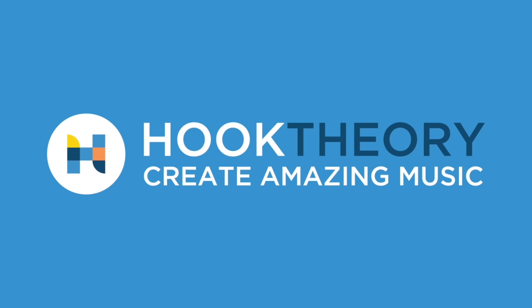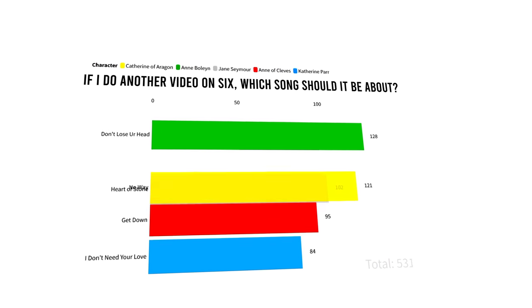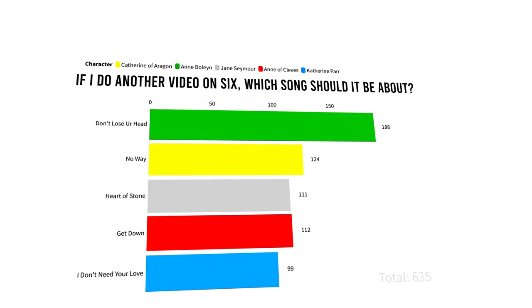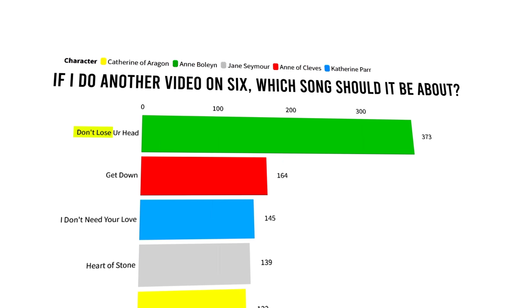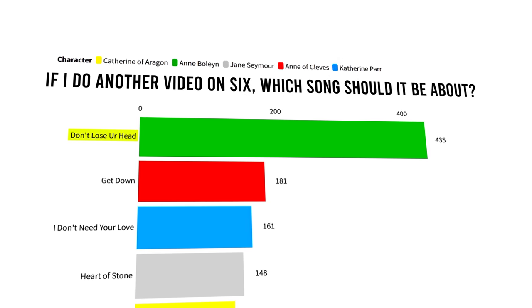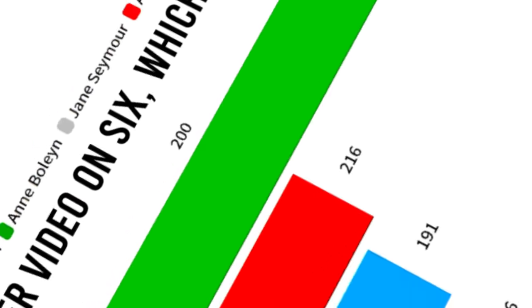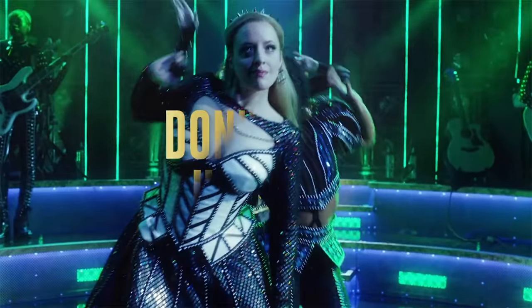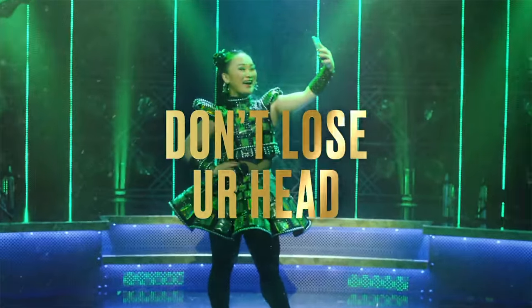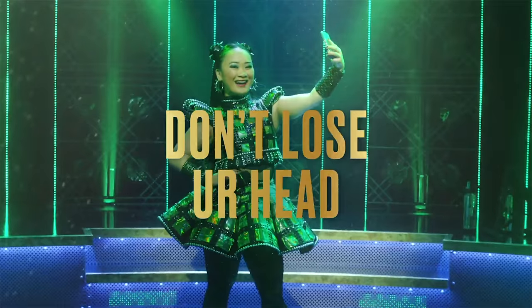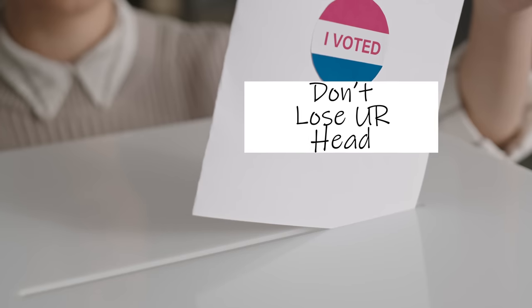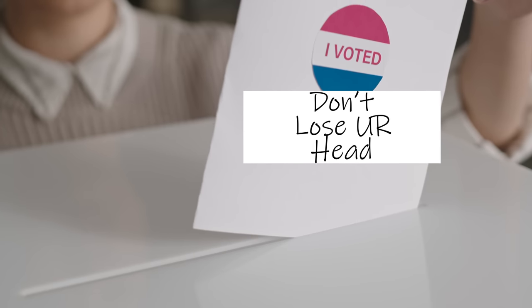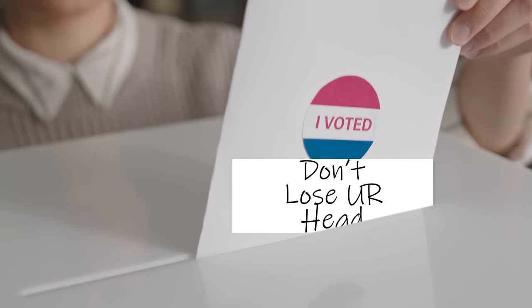This video is sponsored by Hook Theory. By overwhelmingly popular demand, this video is my analysis of Don't Lose Your Head from Six the Musical, a song that is all about power and how the world responds when Anne Boleyn gets power. And I think there's a reason y'all chose it so overwhelmingly, but more on that later.